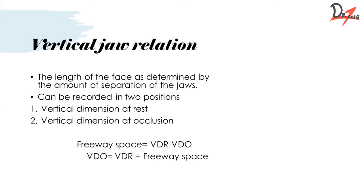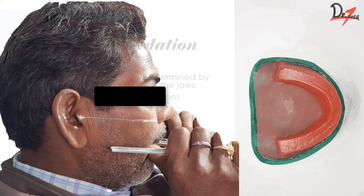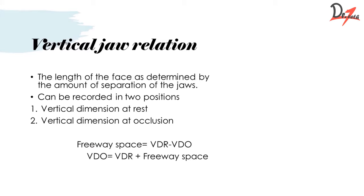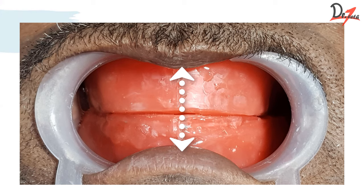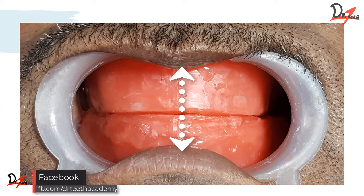Coming to vertical jaw relation. After the occlusal rims are oriented according to the plane of occlusion, we will proceed for vertical jaw relation. So what is vertical jaw relation? It is the length of the face as determined by the amount of separation of the jaws, and it can be recorded in two positions: vertical dimension at rest (VDR) and vertical dimension at occlusion (VDO).